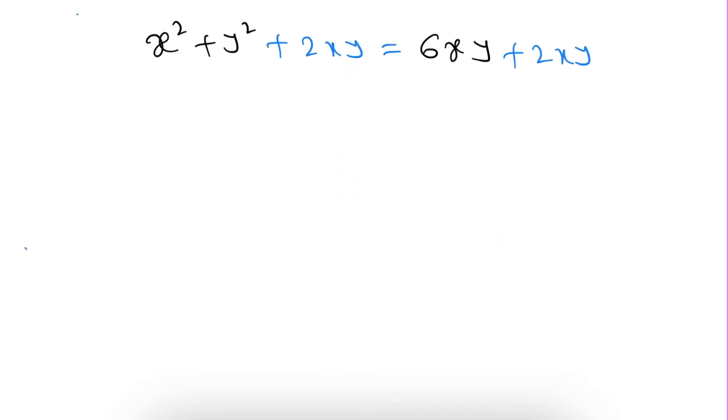Now if we observe this left side part clearly, x square plus y square plus 2xy is in the form of a square plus b square plus 2ab, which is nothing but x plus y whole square, which equals 6xy plus 2xy. It is nothing but 8xy.